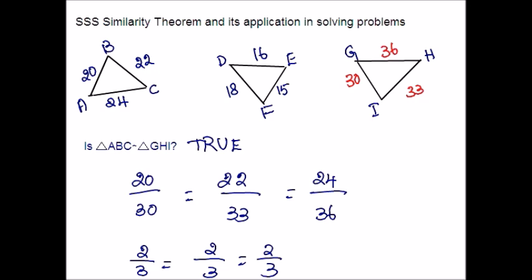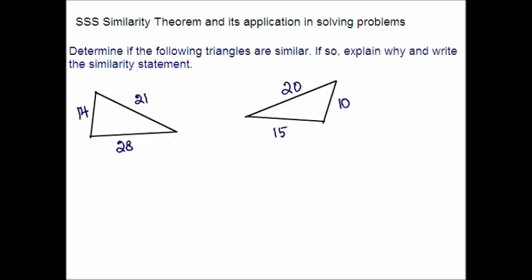Now let me take one more example so that you can determine whether the triangles are similar. In case they are similar, you have to explain why and write a similarity statement. Determine if the following triangles are similar. We will need to find the ratios for the corresponding sides of the triangle and see if they are all the same. Start with the longest sides and work down to the shortest sides.